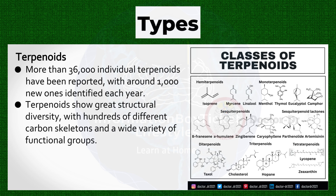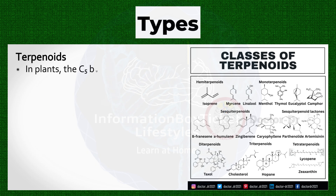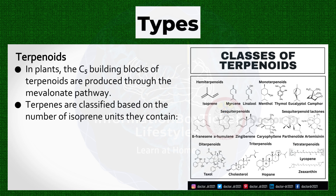Terpenoids show great structural diversity with hundreds of different carbon skeletons and a wide variety of functional groups. They are synthesized from isoprene, a hydrocarbon with five carbon atoms and eight hydrogen atoms, C5H8. In plants, the C5 building blocks of terpenoids are produced through the mevalinate pathway. Terpenes are classified based on the number of isoprene units they contain.